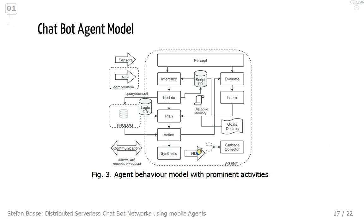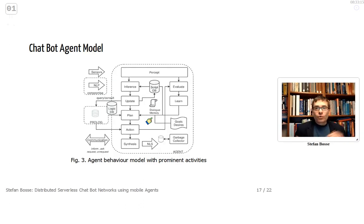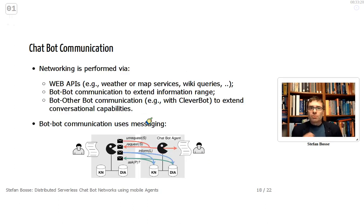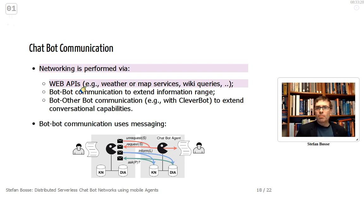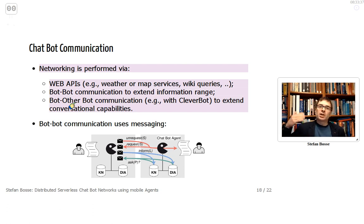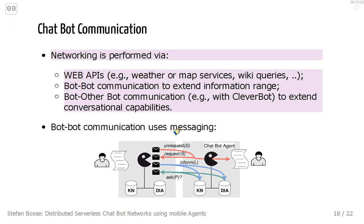The basic chatbot agent behavior model follows a typical perception–inference–update–planning–action cycle, with natural language synthesis at the end. Input comes from the Compromise NLP framework and sensors. Two databases are used: a script database and a logic database representing environmental knowledge and events. Networking is performed via web APIs to access web or map services and Wikipedia queries. Bot-to-bot communication for text and information exchange is supported, including communication with Cleverbot to extend conversational capabilities.